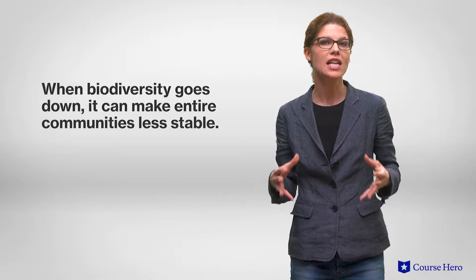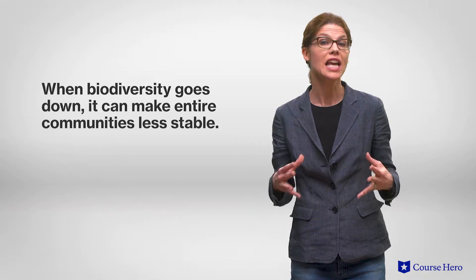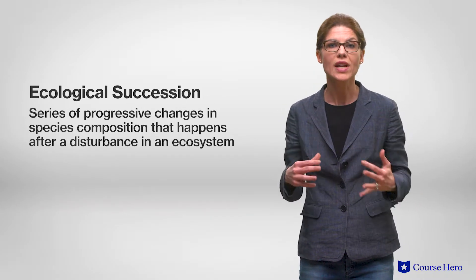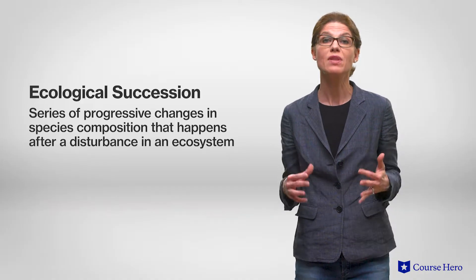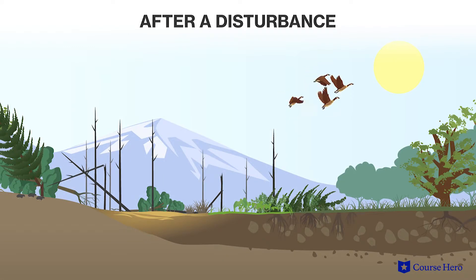As the number of different species increases in a community, biodiversity also increases. However, when biodiversity declines within a community, ecological succession can occur, making an entire community less stable or unable to withstand disturbances that affect its overall structure and function. Ecological succession is a series of progressive changes in species composition that happens after a disturbance in an ecosystem. One example is the migration of birds during a natural disaster, such as a hurricane. When a hurricane destroys an entire habitat, it can cause species structure to change as old species leave and new species move into the habitat.